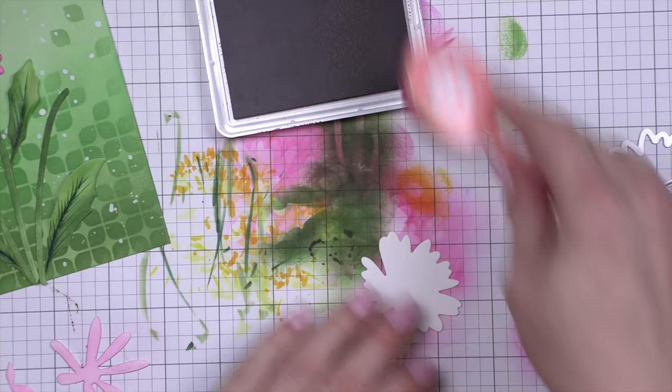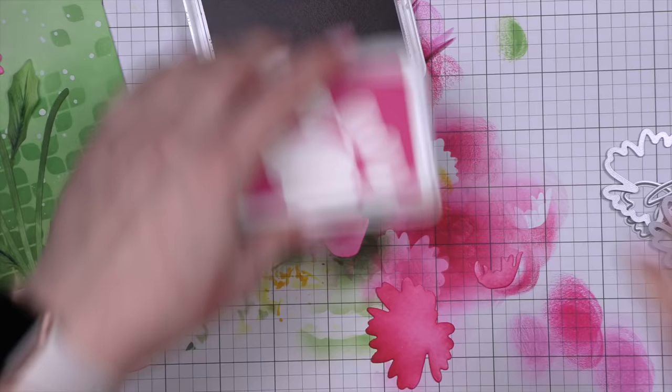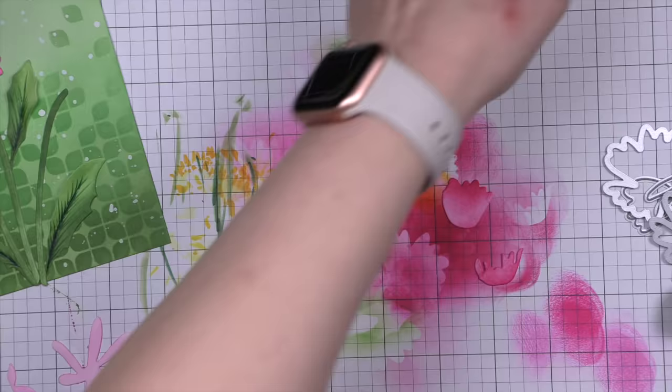Something I've really been working on is embracing imperfection a little bit more and not worrying so much about little things, because generally it works out in the end. Finally, I finished with rose on my final layer, and let's assemble our final flowers.